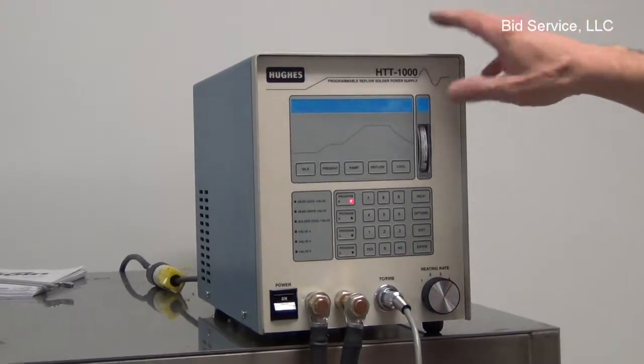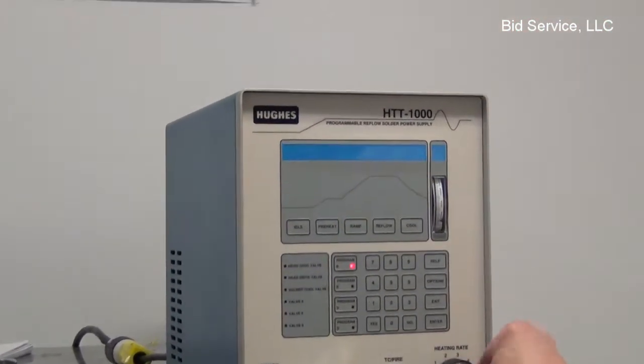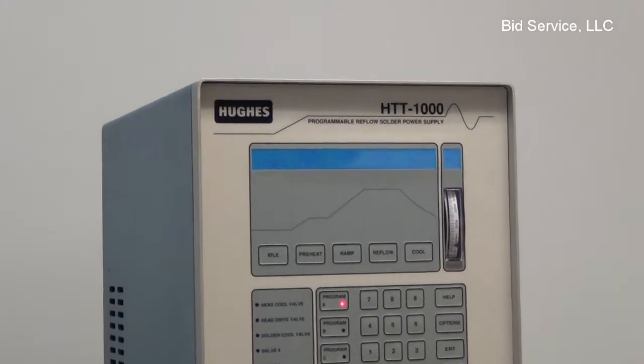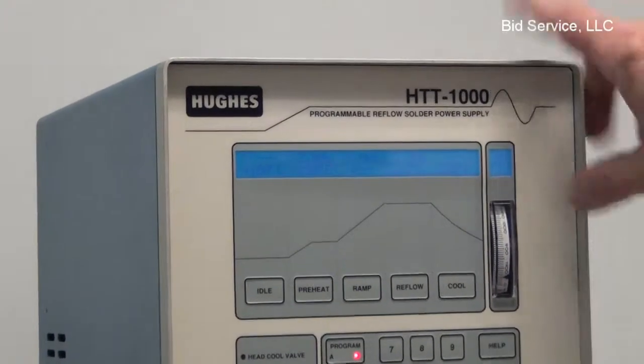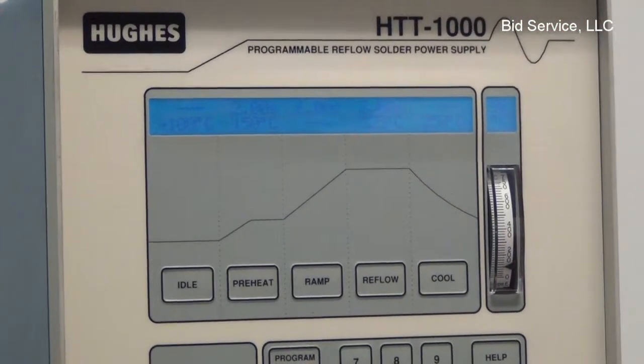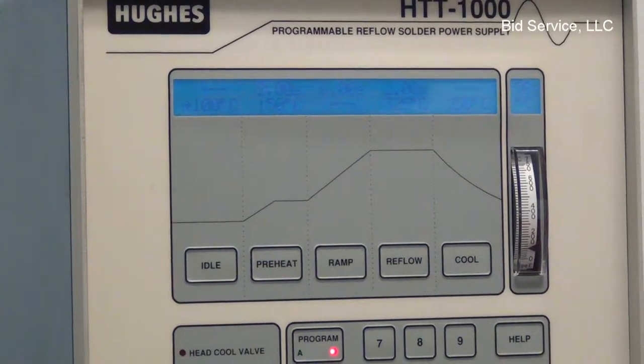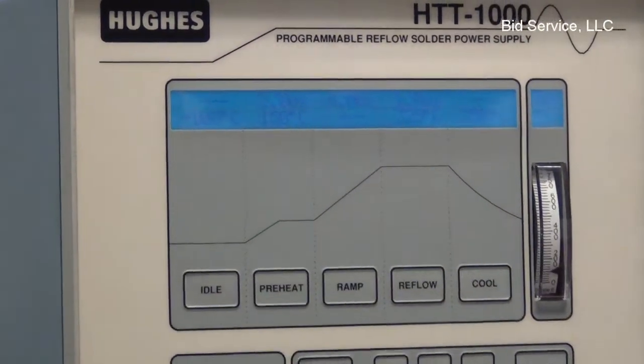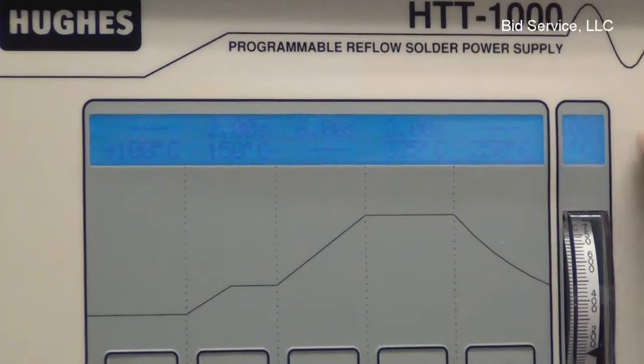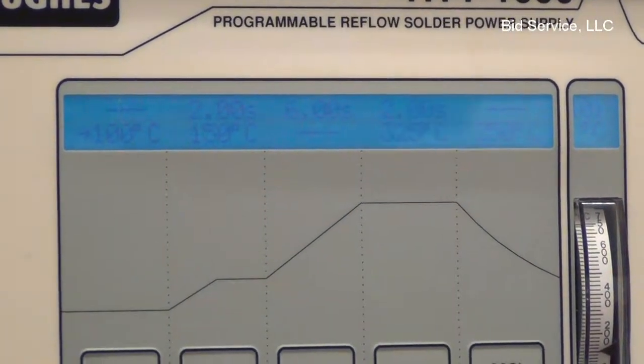Alright, here's your third unit. Again, hooked up to our test fixture. Same program. I'm idling at 100°C. You can see that on your analog gauge as well as your digital readout.